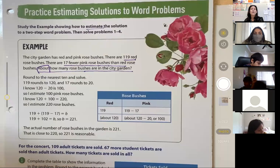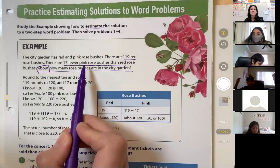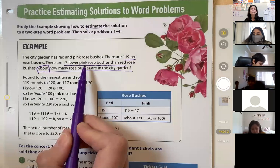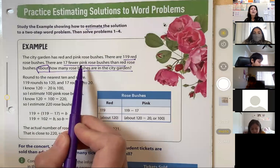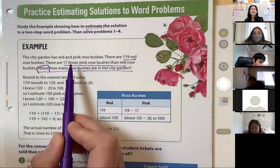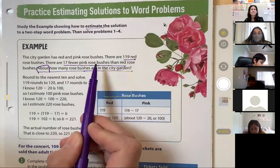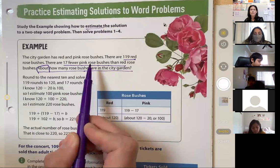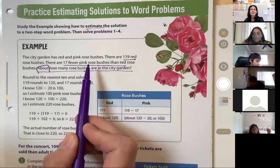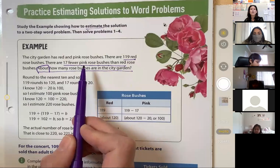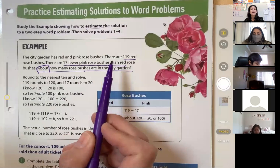The other thing I want to bring to your attention is this, and it is a very common error that students make. Take a look here at the pink rose bushes. I want you to look at the words. 17 fewer pink rose bushes than red. This question is not saying to you that there are 17 pink rose bushes. It is telling you that there's 17 fewer than red. So how would you calculate pink?